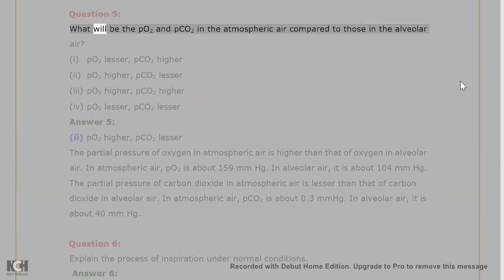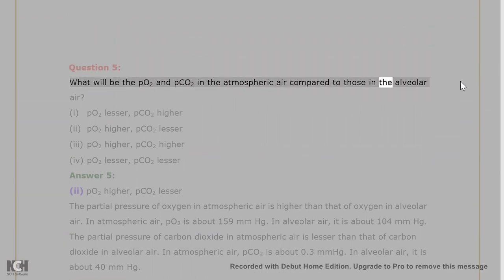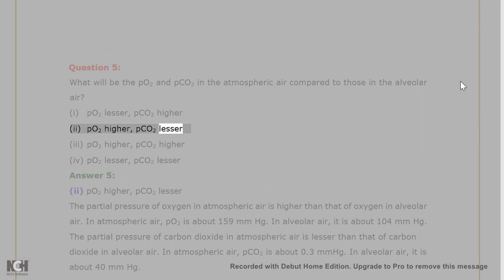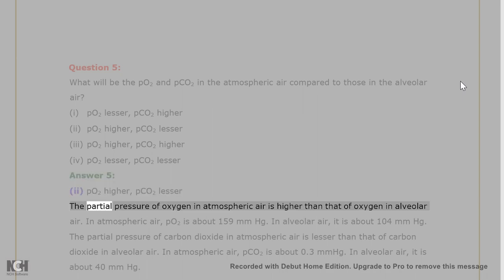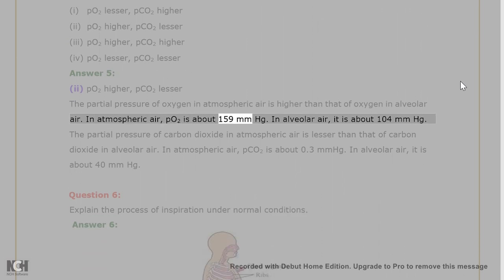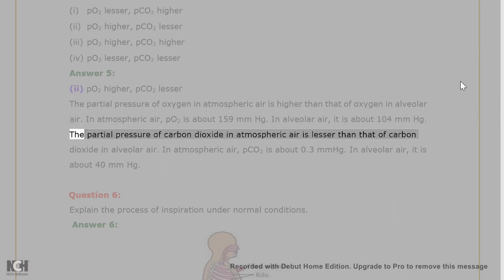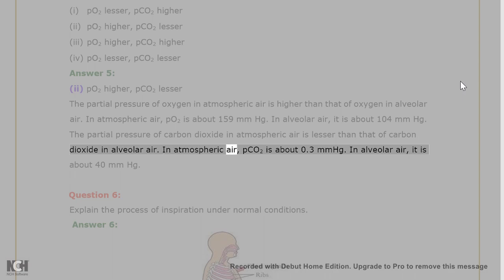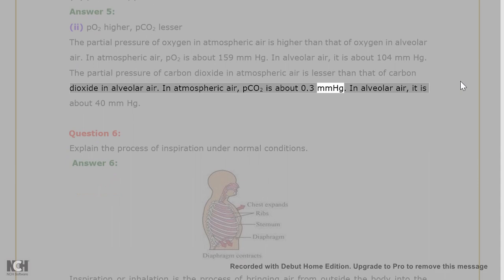Question 5: What will be the pO2 and pCO2 in atmospheric air compared to alveolar air? Answer 5: pO2 higher, pCO2 lesser. The partial pressure of oxygen in atmospheric air is higher than in alveolar air — atmospheric pO2 is about 159 mmHg, while alveolar pO2 is about 104 mmHg. The partial pressure of CO2 in atmospheric air is lesser — atmospheric pCO2 is about 0.3 mmHg, while alveolar pCO2 is about 40 mmHg.